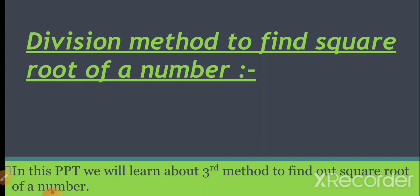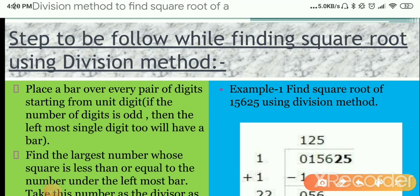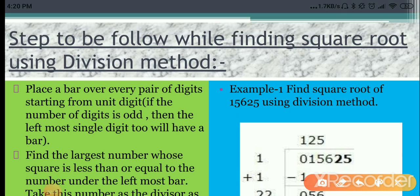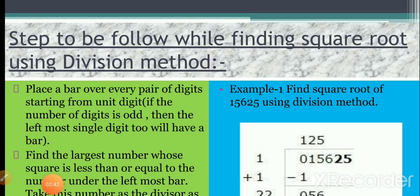Let's start. First, let's see which steps to follow. Step 1: Place a bar over every pair of digits starting from the unit digit. If the number of digits is odd, then the leftmost single digit will also have a bar. For example, let's take the number 15625 and find its square root using the division method.